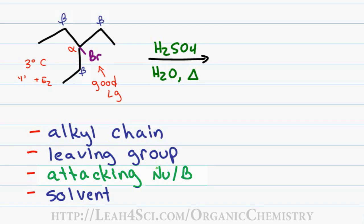Since this is elimination, we're looking for a base rather than a nucleophile. H2SO4 is an acid, so we look to the concept of solvolysis, where the solvent itself acts as the attacking molecule. H2O is also a weak base, but because it's neutral, it's not strong enough to forcibly kick out a leaving group and must resort to a one-type reaction — SN1 or E1 — where it waits for the leaving group to depart before attacking.